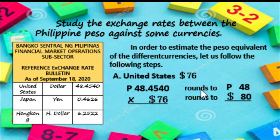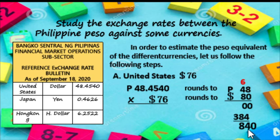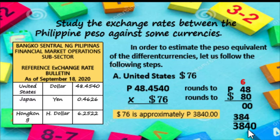Then we multiply: 48 times 80. So the ones place is 0, then 8 times 8 equals 64, carry 6; 8 times 4 plus 6 equals 38. Adding the results: 3,840. So $76 is approximately P3,840.